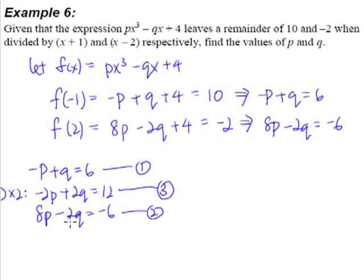Now we see that this is positive 2q and this is negative 2q. What we do is elimination method. So equation 3 plus equation 2, we will end up with -2p + 8p, that will give us 6p.